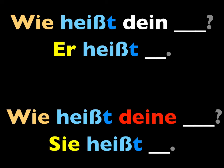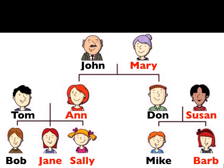Once again, I'll be asking wie heißt dein plus a male family member, and your answer will be his name is — er heißt — and fill in the name. For the females, I'll ask wie heißt deine blank, and your answer is sie heißt blank. So this time, let's presume you are Anne. Answer the question.